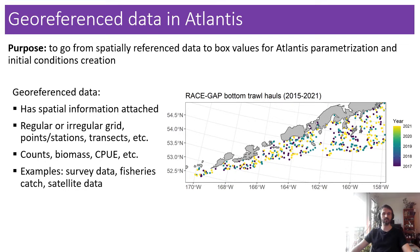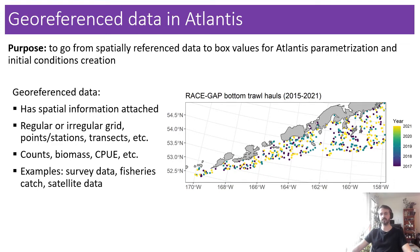I'll be using the term georeferenced data quite loosely here — it really just means data that has some kind of spatial information attached to it. It can be on a regular or irregular grid. It can be sites, points, stations, transects, and anything like that. It can come as counts, as biomass, as CPUE. Ideally it would have some sort of effort measure, such as area swept. Examples include survey data, fisheries catch, and satellite data.